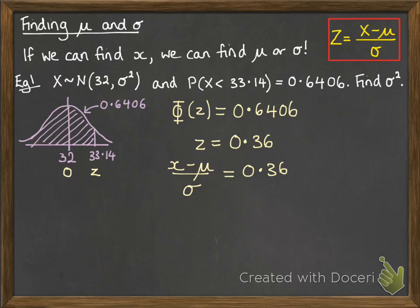Now we substitute in that x minus mu over sigma must also be 0.36. We know that x is 33.14, we know the mean is 32, we don't know the sigma, and that's equal to 0.36.